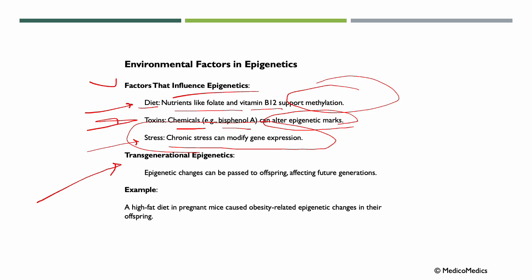We have transgenerational epigenetics. Epigenetic changes can be passed to offspring affecting future generations. For example, a high-fat diet in pregnant mice caused obesity-related epigenetic changes in their offspring.